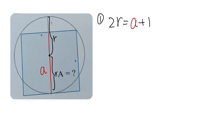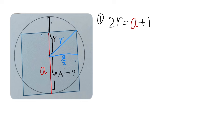Now let's use the usual geometry trick and connect the center to the corner of the red square — that line is also a radius. We can also draw a horizontal line. This horizontal segment is half of a, so it's a/2. We have a right triangle, and since the full radius is r and one segment is 1, the vertical side must be r minus 1.